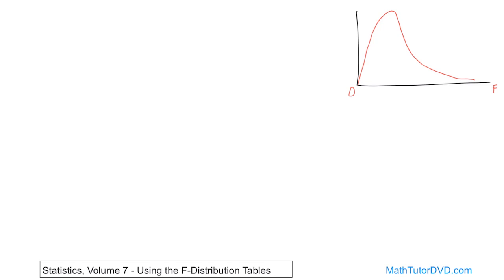When you're using the tables in the back of the book, you're trying to find what we call a critical value. For hypothesis testing problems, that critical value is called F sub alpha. F sub alpha is a value of F off the table — specifically the value of F that has, as its area to the right-hand side under the curve, the value of alpha, which is the level of significance.